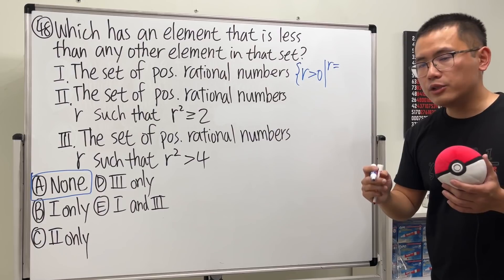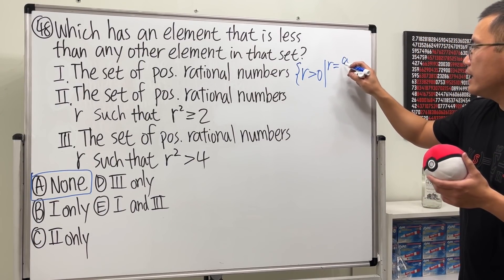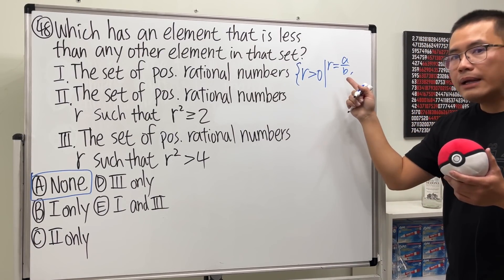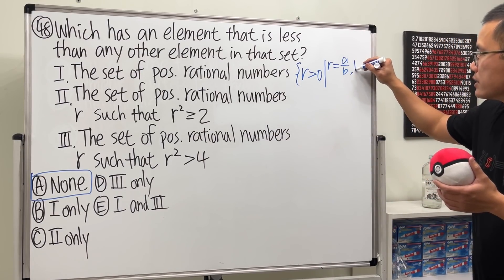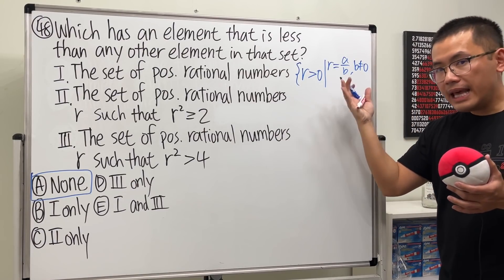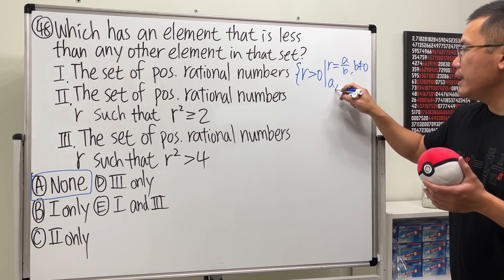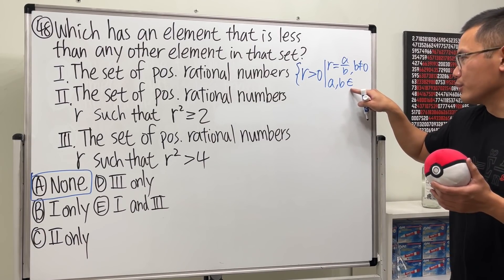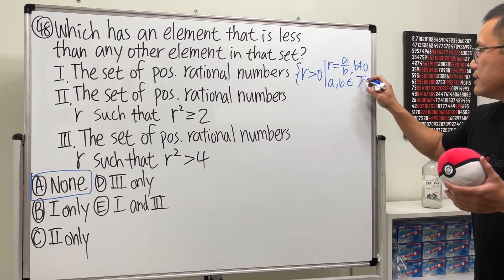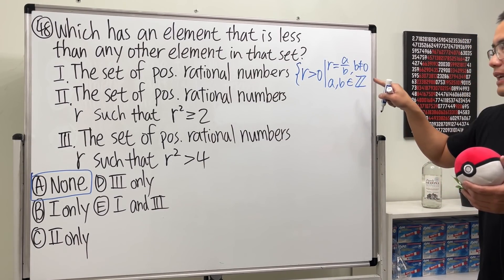But we have a fraction, so that means we cannot have zero on the bottom. So we'll say b cannot be equal to zero, and then we also have to say a and b, they are elements, right? That's what this notation is for, the set of integers. So that's what the Z is for, and close that.